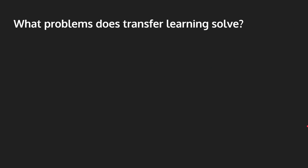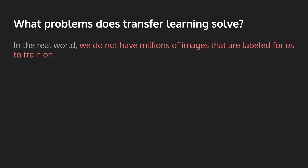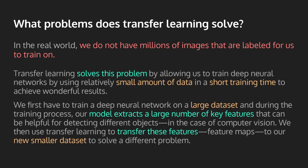Now, what problems does transfer learning solve? In the real world, we do not have millions of labeled images to train on. It would be extremely tedious if we had to label millions of images on our own, and in general, we probably won't have access to these on a daily basis for our jobs. Transfer learning solves this issue by allowing us to train deep neural networks using a relatively small amount of data in a short training time to achieve wonderful results. Transfer learning is transferring what a neural network has learned from being trained on one dataset to another related dataset.